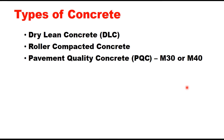Dry Lean Concrete (DLC) is used as a base layer and is provided below the concrete slab on high volume roads. This type of construction is also suitable for low volume roads. Pavement Quality Concrete (PQC) of grade either M30 or M40, depending upon traffic conditions, is the concrete slab designed to serve as the bearing surface. M30 concrete is generally used for rural roads and M40 concrete is used for high traffic roads like state highways and national highways.